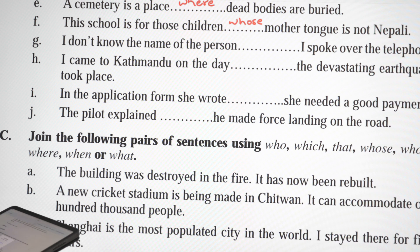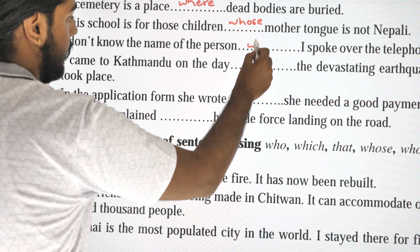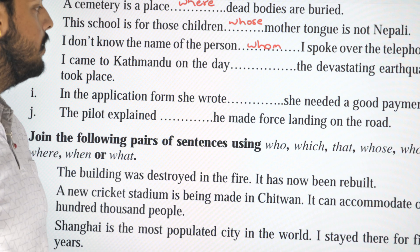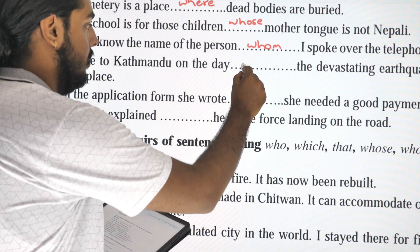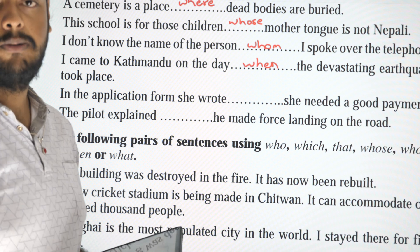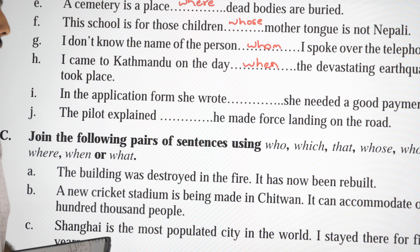'I don't know the name of the person that I spoke to over the telephone' — or: 'whom I spoke to over the telephone.' Next: 'I came to Kathmandu on the day when the devastating earthquake took place.'